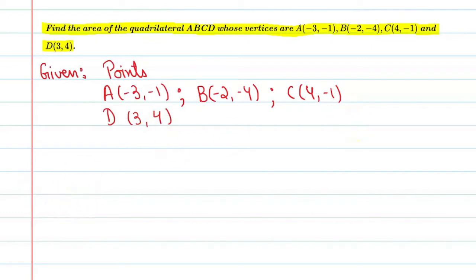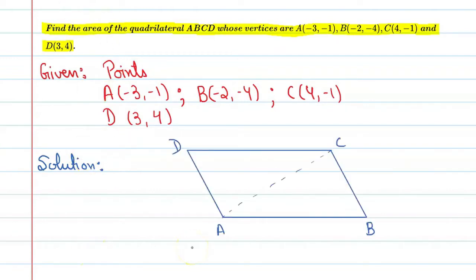Alright, let's start our solution. Since this is a quadrilateral and we don't have a direct formula, what we have to do is find the area of triangle ABC and then the area of triangle ACD, and then add both. This is the trick to solve this question.